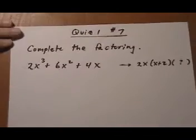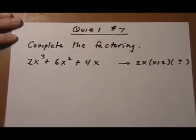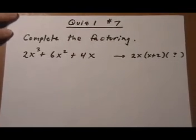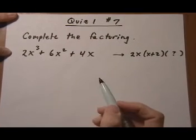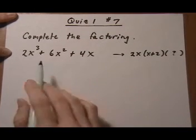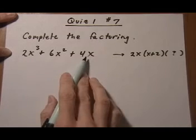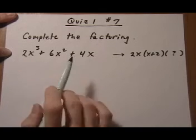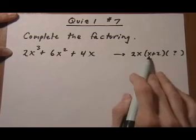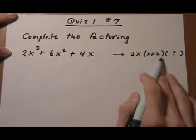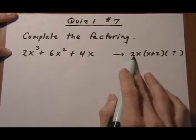And let's also fit in quiz 1 number 7. Another factoring problem. This one is a trinomial. So again we're going to try to figure out first of all what the GCF is. And the problem asks to complete the factoring. So we're given what one of the binomial factors is already. We're also given what the GCF is.